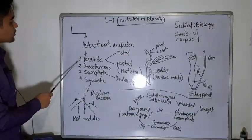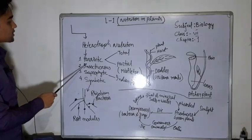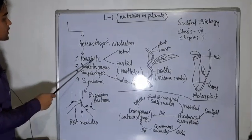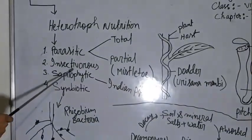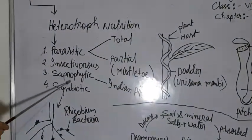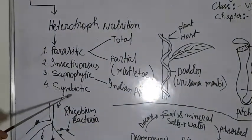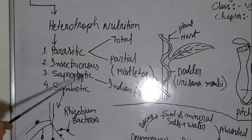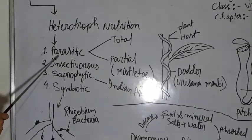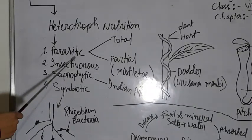The examples of heterotrophic modal nutrition include parasitic modal nutrition, insectivorous, saprophytic, and symbiotic. Here we are going to talk about parasitic modal nutrition.